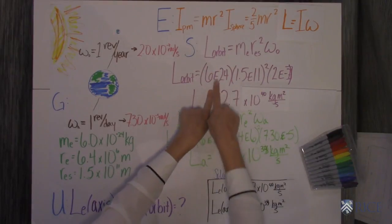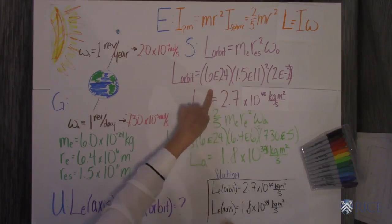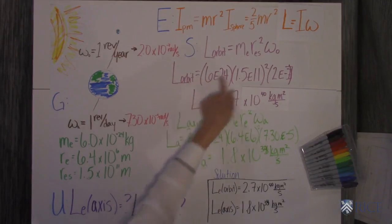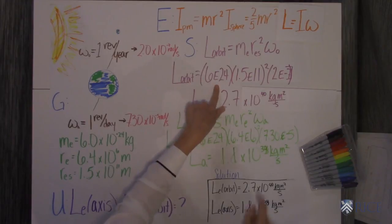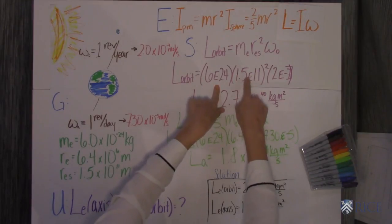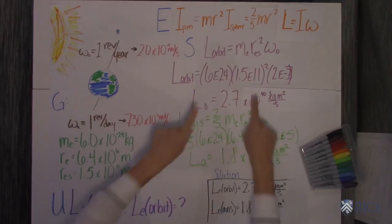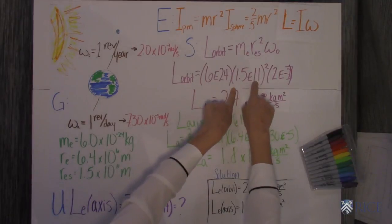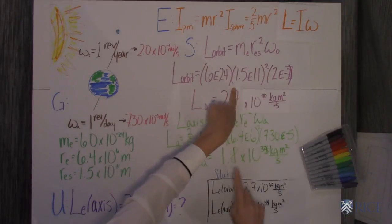Remember when you put it in your calculator, you put that little e, right? And you plug all these numbers in, the mass of the Earth, the radius of the Earth's orbit, which is 1.5 times 10 to the 11th. Make sure and square it.